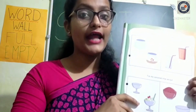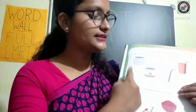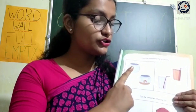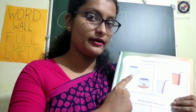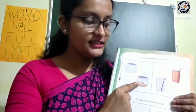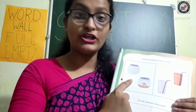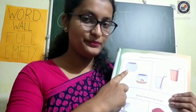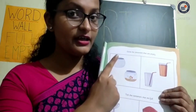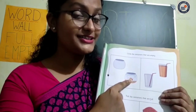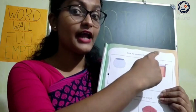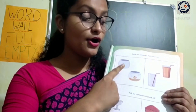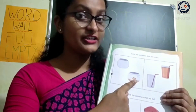In this first picture, we can see jars. This is a jar, and this is also a jar. In the second and third jar, there is a fish, but in the first jar, there is no fish. So that means this jar is empty and this jar is full. We have to circle the container which is empty, so we have to circle this first jar, not the others.